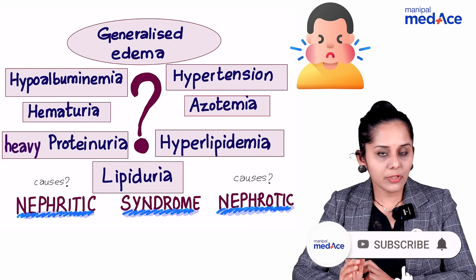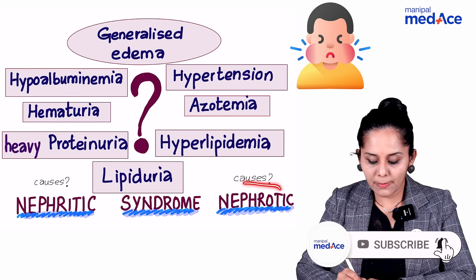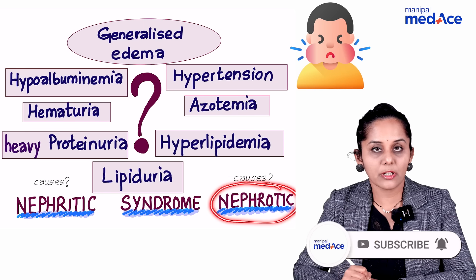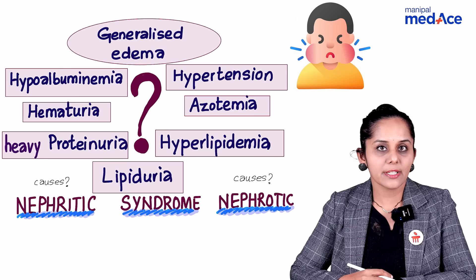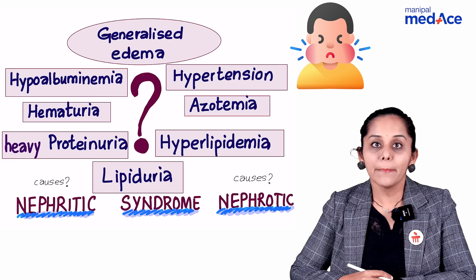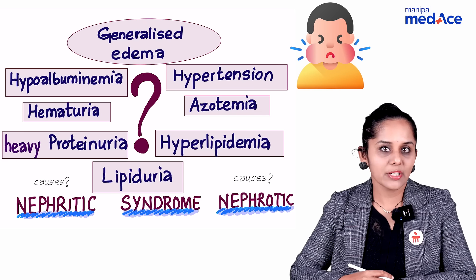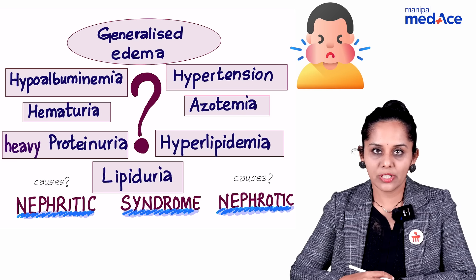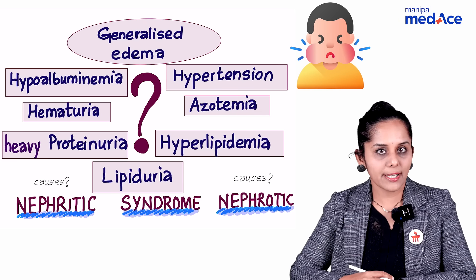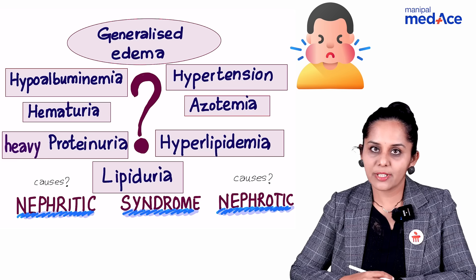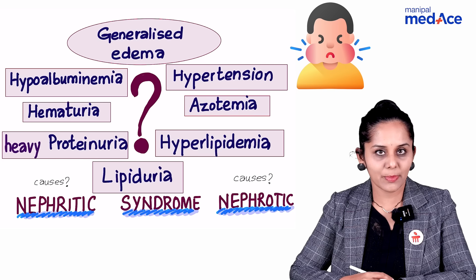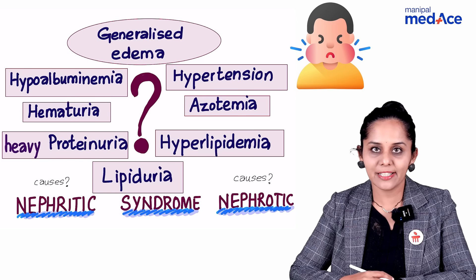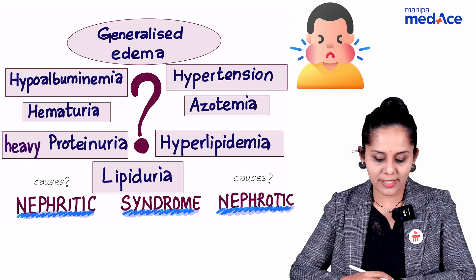If all those features are present then we are talking about nephrotic syndrome. The common causes include minimal change disease in children, focal segmental glomerulosclerosis in adults, and membranous nephropathy in elderly individuals.